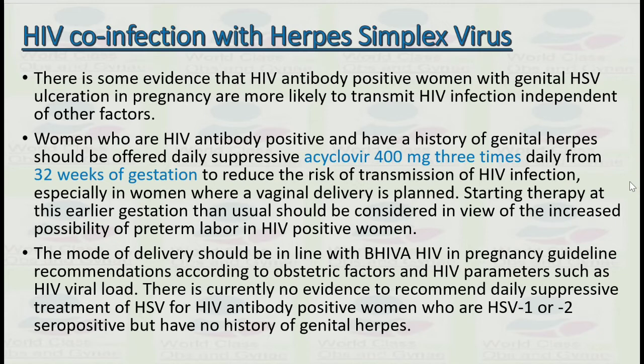Starting therapy at an earlier gestation than usual should be considered in view of the increased possibility of preterm labor in HIV positive women, so from 32 weeks we should start acyclovir. The mode of delivery should be in line with BHIVA HIV in pregnancy guideline recommendations according to obstetric factors and HIV parameters such as viral load. There is currently no evidence to recommend daily suppressive treatment of HSV for HIV antibody positive women who are HSV1 or HSV2 seropositive but have no history of genital herpes.